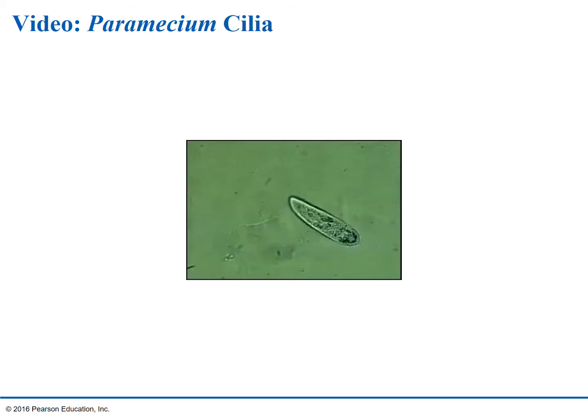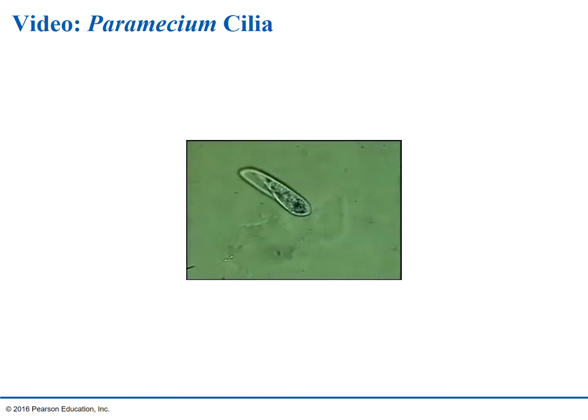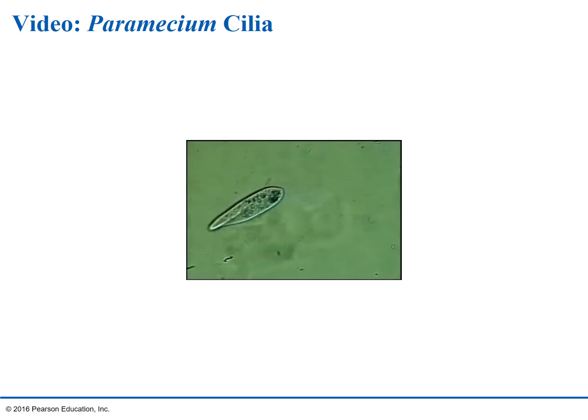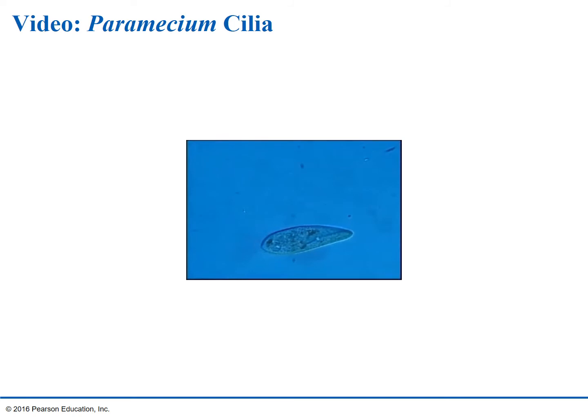Now we're back to cilia. If you had a chance to look at protists — paramecium were a part of it. Basically this organism is covered in these small projections called cilia. They're showing different contrasting colors behind it and pointing out the cilia. They're very small hair-like projections — you can see them really well with an electron microscope.